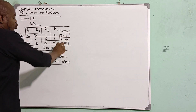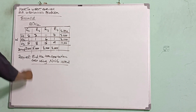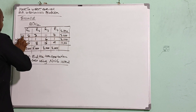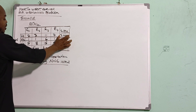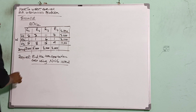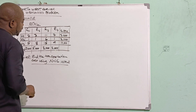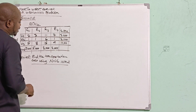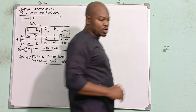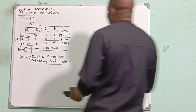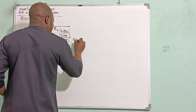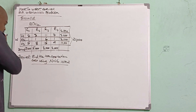Now let's see if this problem is balanced or unbalanced. Let's calculate the total supply available. W1 is 7,000; 7,000 plus 4,000 makes 11,000; and 11,000 plus 10,000 makes 21,000. So the total supply adds up to 21,000.